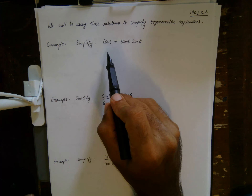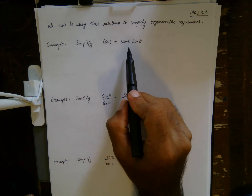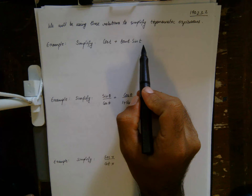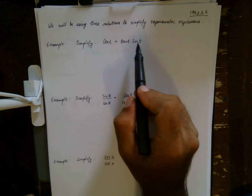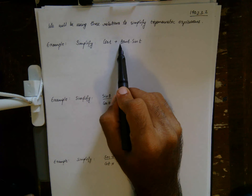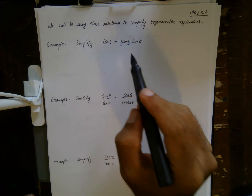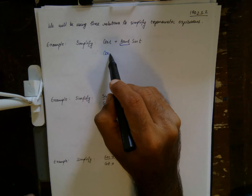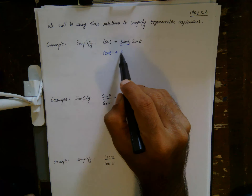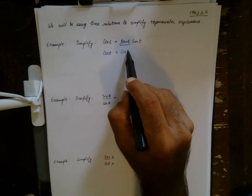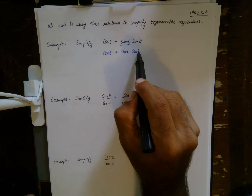The first example is cos(t) + tan(t)·sin(t). The first thing to remember is that I can write tangent in terms of sine and cosine: leave cosine as it is, and tangent is the ratio of sine to cosine.